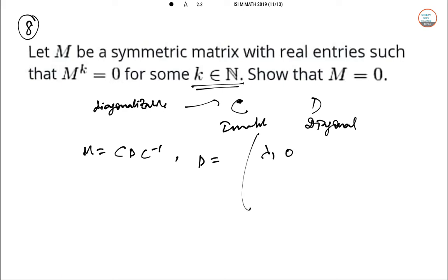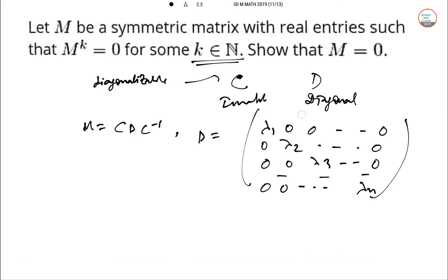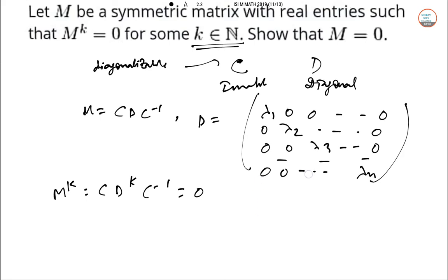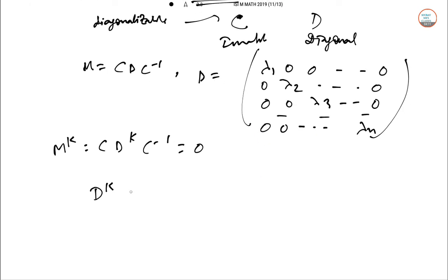So then M^k = CD^kC⁻¹ = 0. So we can write D^k = diag(λ₁^k, λ₂^k, ..., λₙ^k) = 0.